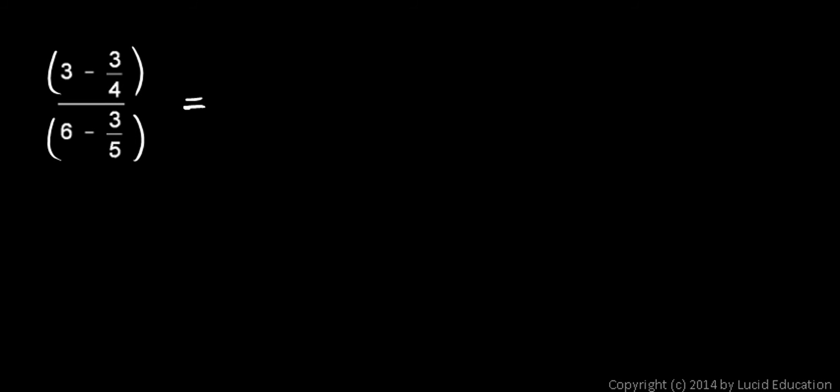So let's rewrite this, but think about doing this operation first, the 3 minus 3 fourths. Well let's rewrite this 3 as 12 fourths. So this is 12 fourths minus 3 fourths.